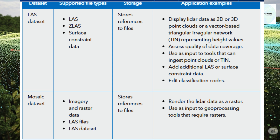In general, a LAS dataset enables you to work with LiDAR point data in its native format. A Mosaic dataset stores and manages raster and imagery data, as well as LiDAR data. The option that you choose depends on how you intend to use the LiDAR data.